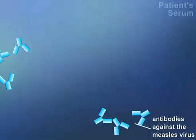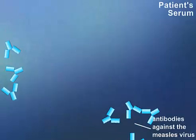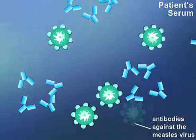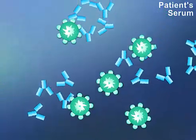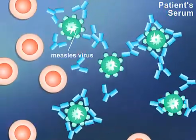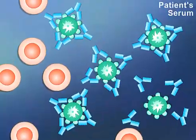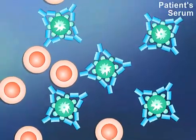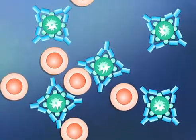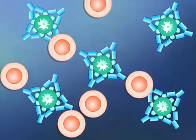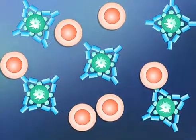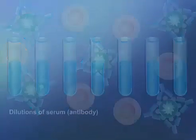If the patient has measles, the serum will contain antibodies against the measles virus. If the patient's serum is mixed with measles virus and red blood cells are added, hemagglutination will not occur. Antibodies reacting with the virus particles prevent reaction between the virus and the red blood cells.